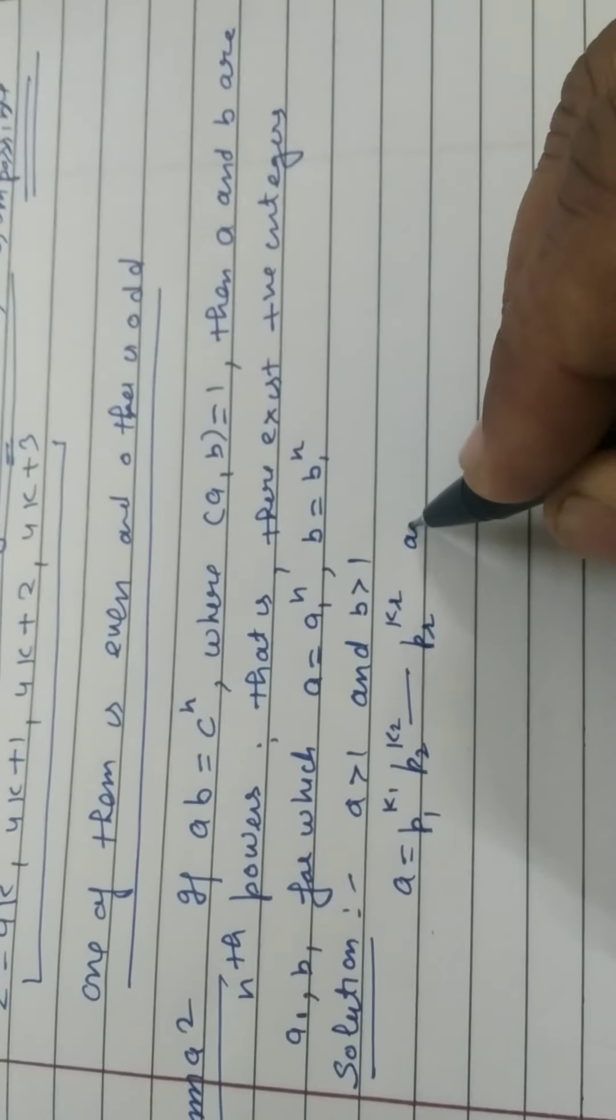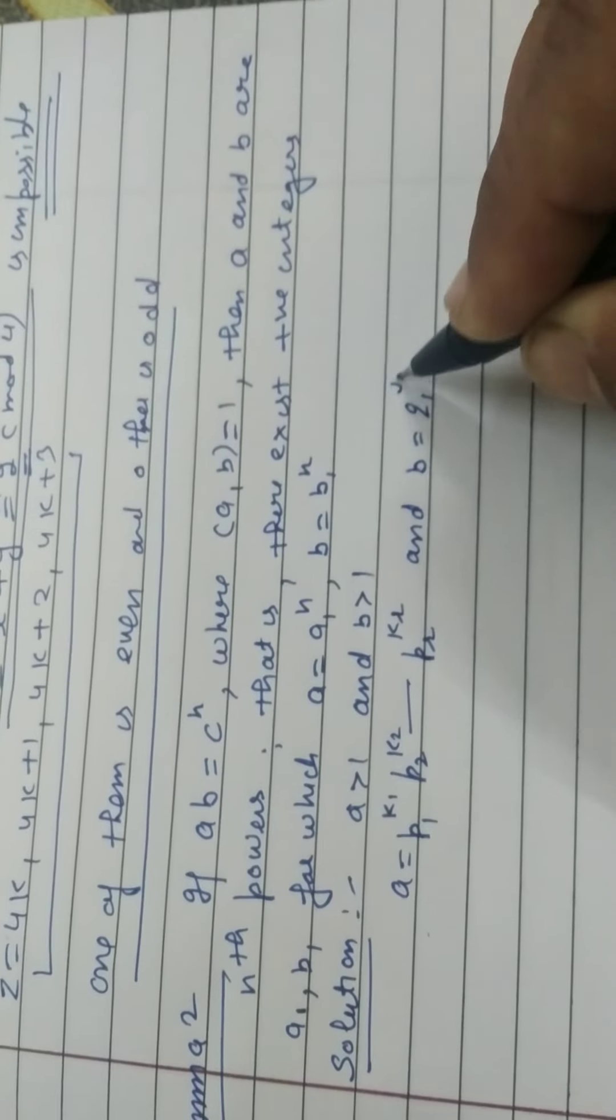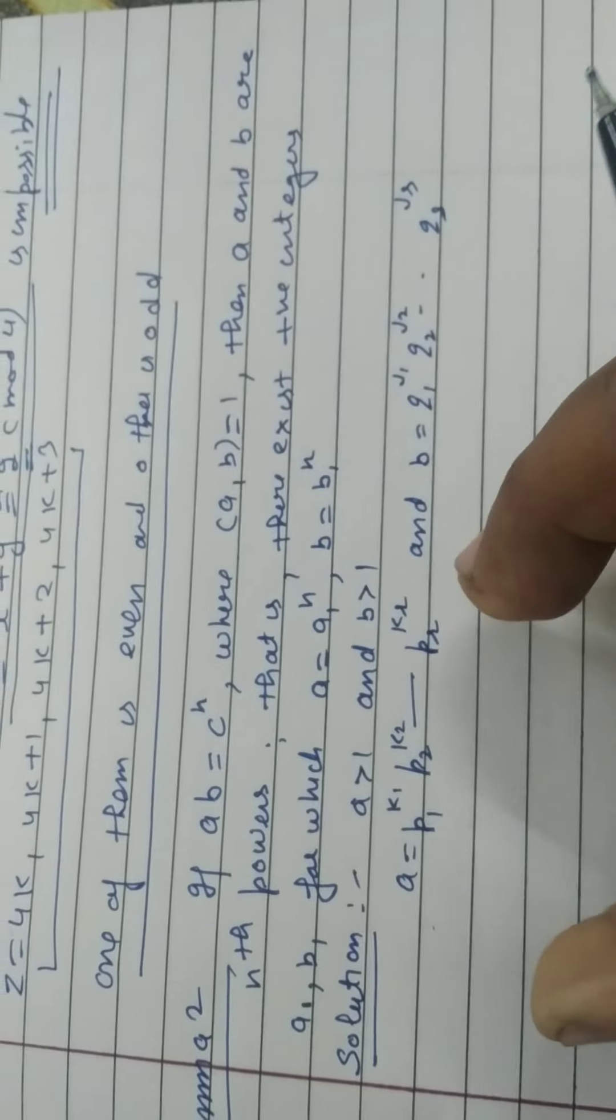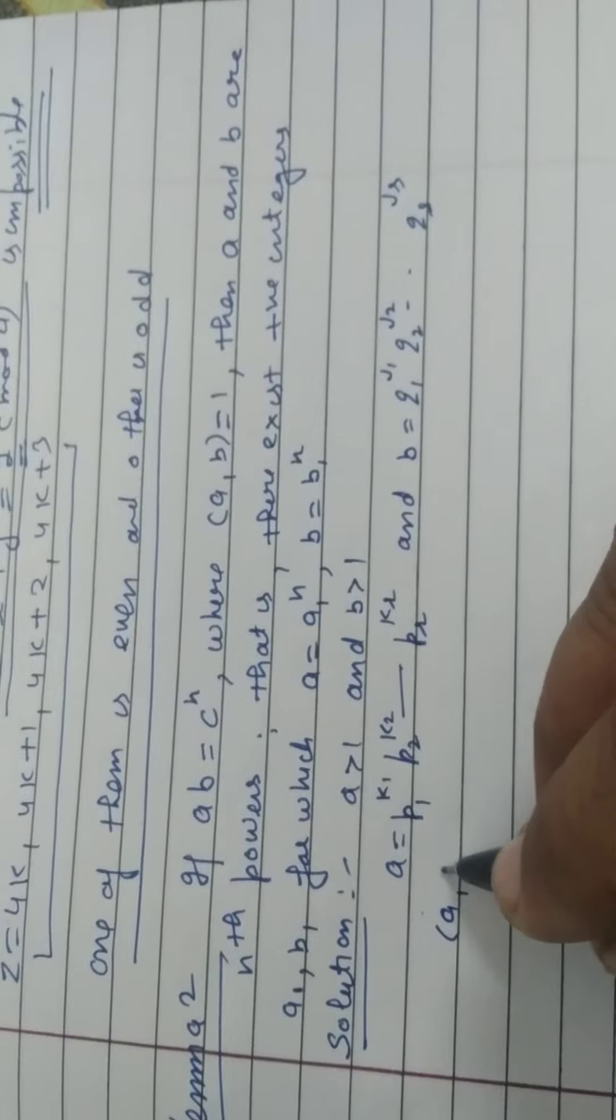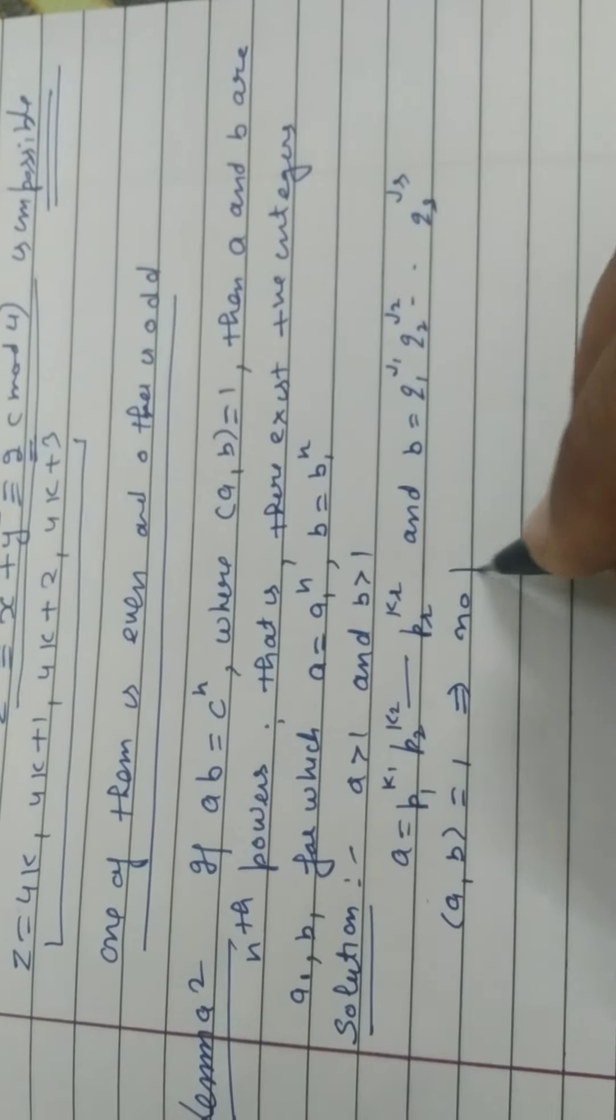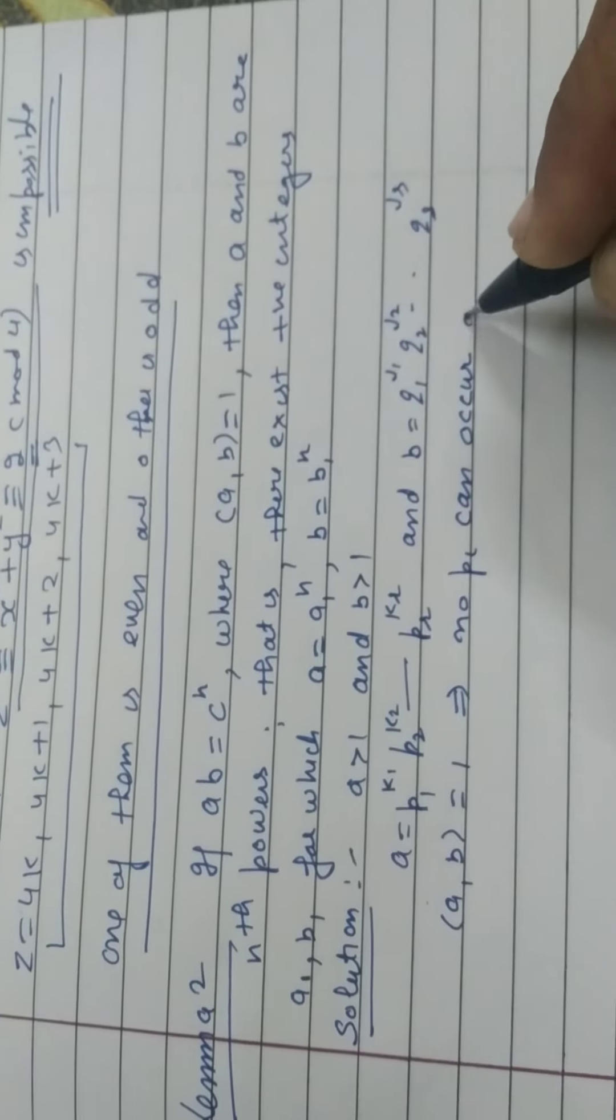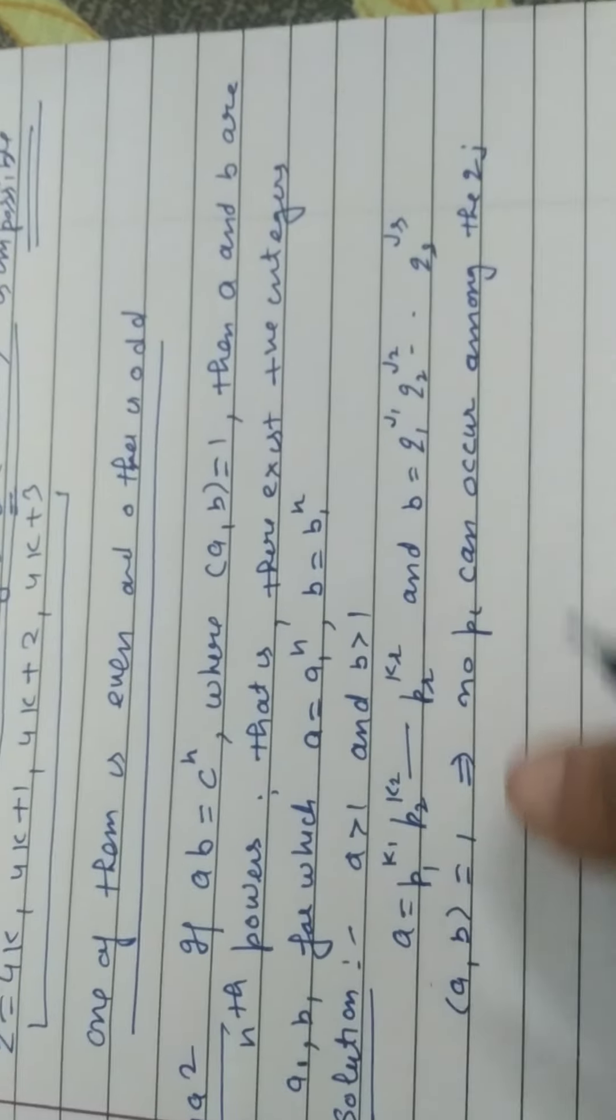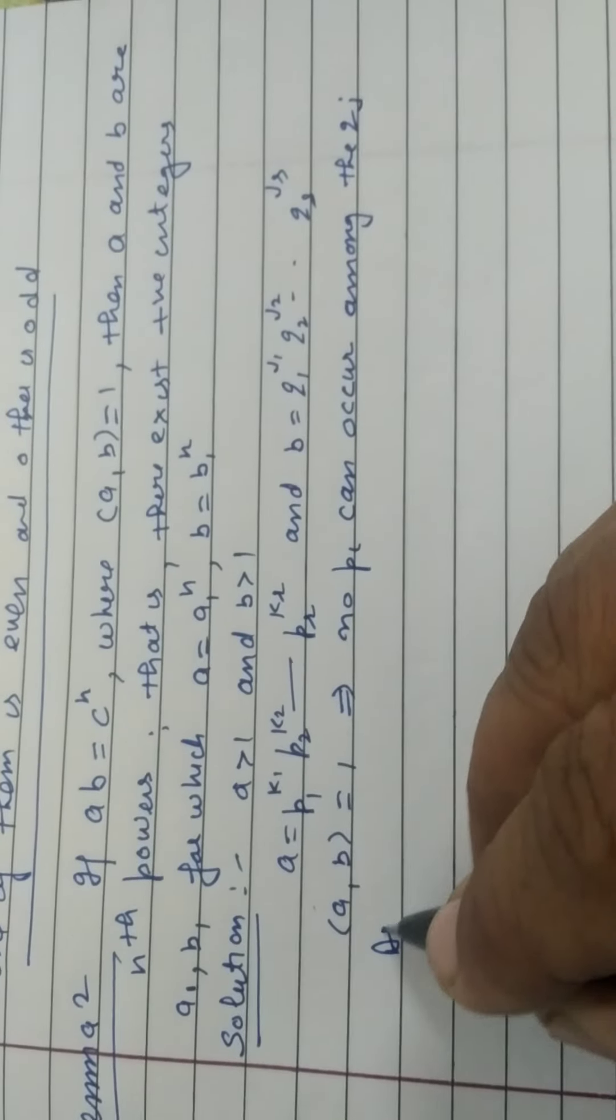Now we do prime factorization of B: Q1 to the power J1, Q2 to the power J2, QS to the power JS. It is given that GCD of A and B is 1, implies that no PI can occur among the QJ. यानी की, कोई भी PI, QJ में occur नहीं हो सकता. As a result, हमें क्या मिला?